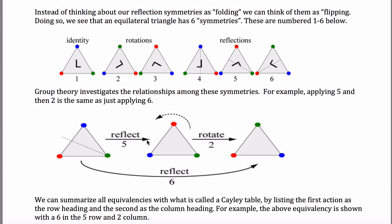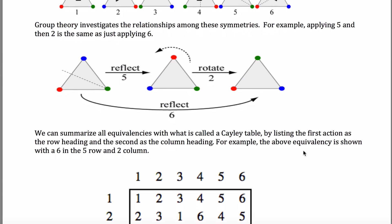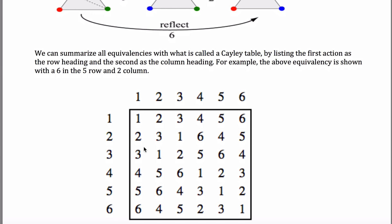So we take this and rotate it counter-clockwise, bringing the red here, the blue over here, and the green up here. Staring at this picture, you'll note it's exactly a 6. What this is saying is that if you do a 5 and then a 2, that's the exact same as doing a 6, which might be kind of surprising. There's this thing called a Cayley table that summarizes all of those — a 5 and then a 2 gives a 6.